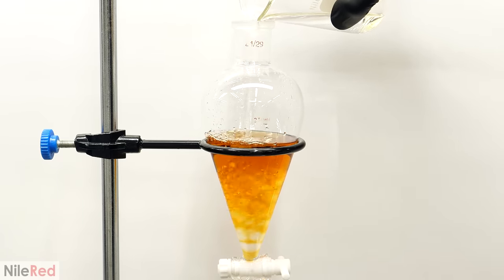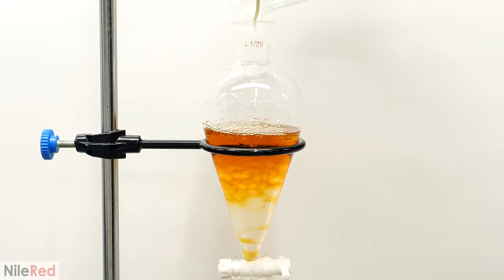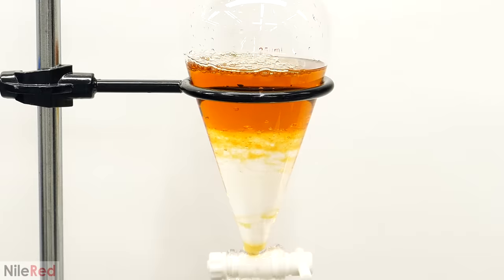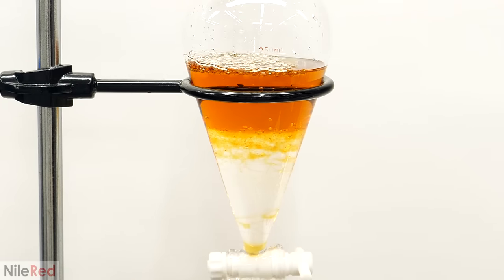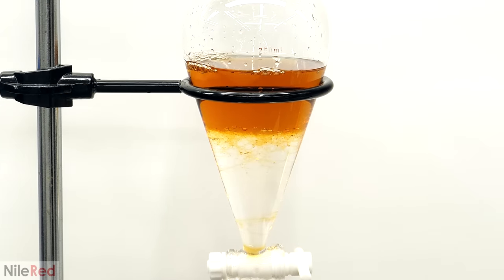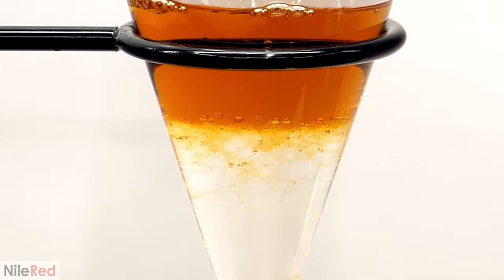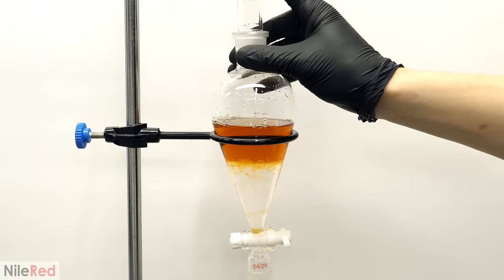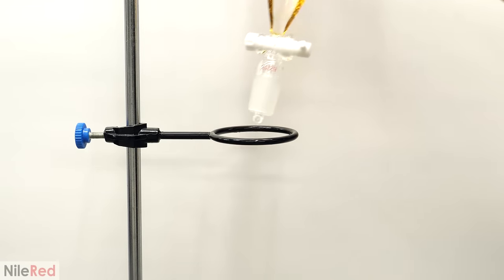The DCM had a much higher density, and it also couldn't mix into the syrup, so almost all of it just quickly sank to the bottom. The idea here was that the caffeine, and hopefully nothing else, was much more soluble in the DCM. This would cause the caffeine to prefer being in the DCM, and it should slowly get pulled from the syrup. But just letting it sit like this wouldn't work very well, because the two liquids are barely touching. To have an efficient extraction, I had to maximize the surface area between the two, and this is usually done by just shaking it. So I sealed the funnel with a stopper, took it off the stand, and I really tried to mix them together.